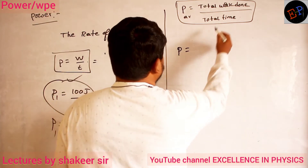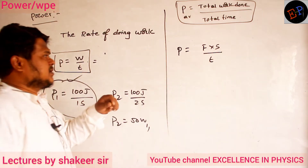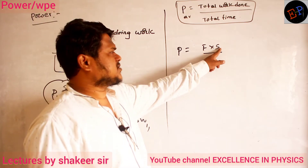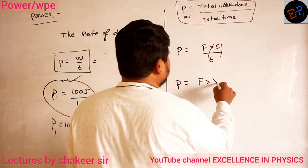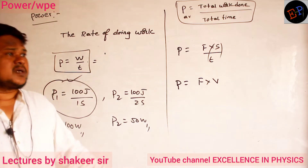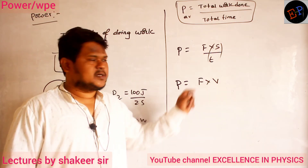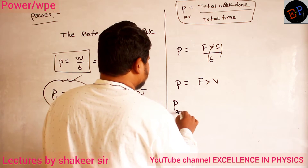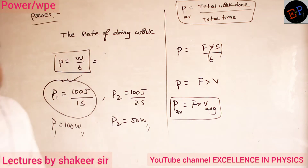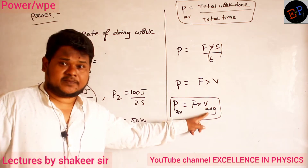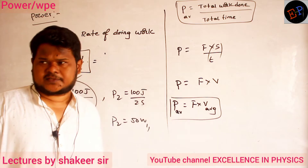Average power means total amount of work done in total amount of time. We call it P_av — average power done by the machinery, person, or anything. Similarly, power equals work done, which can be written as force into displacement divided by time taken. So power can also be written as force into displacement divided by time, where displacement divided by time is velocity. Therefore, P_average equals force into average velocity.